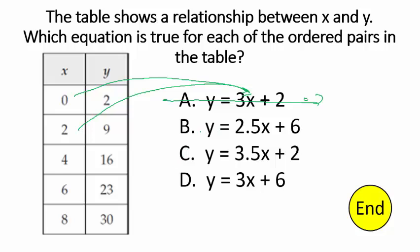Moving on to B: plug in 0 — 0 plus 6 is 6. It fails on the first try, so that does not work. Skip to C, starting with 0. If I plug in 0, I get 0 plus 2 equals 2 — that works. Plug in 2: I get 7 plus 2 equals 9 — that's okay.